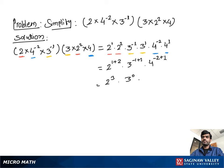We write 2 cubed as 8, and 3 to the 0 as 1, because any term raised to the power 0 is 1. To make the power of 4 positive, we write 1 over 4. This gives us 8 over 4, and when we divide 8 by 4 we get 2, so our final answer is 2.